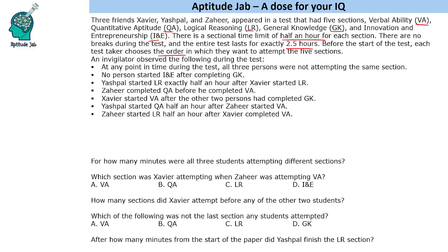We are given certain conditions: at any point in time during the test, all three persons were not attempting the same section; no person started I&E after completing GK; and so on.